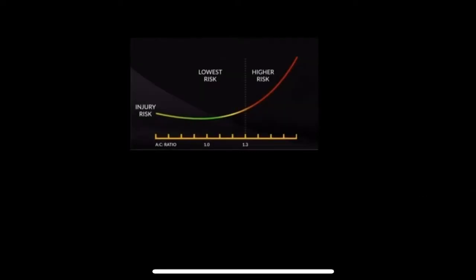This graph represents acute to chronic workload ratio. This is measured within the Driveline Pulse app over a 28-day span for chronic workload and a 7-day span for acute workload. The suggested range of acute to chronic ratio is 0.7 to 1.3, and that's shown right here. So that's the general sweet spot you would want players to be in when they're accumulating workload when throwing.